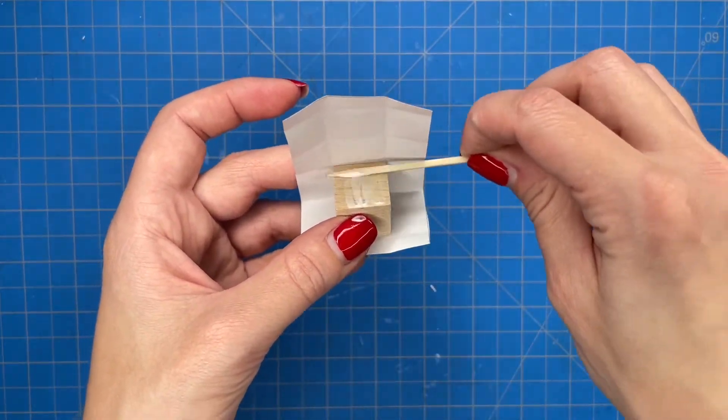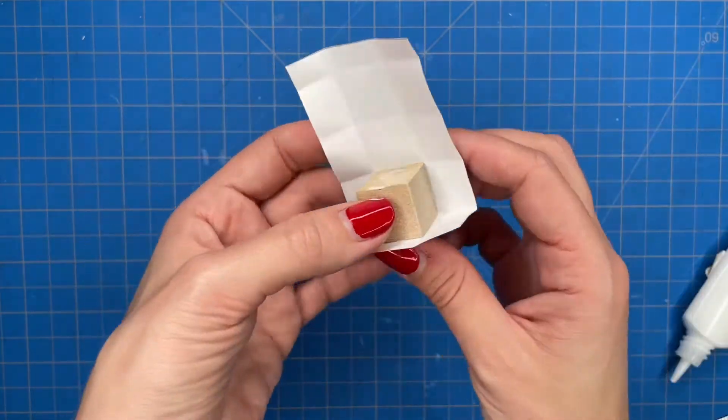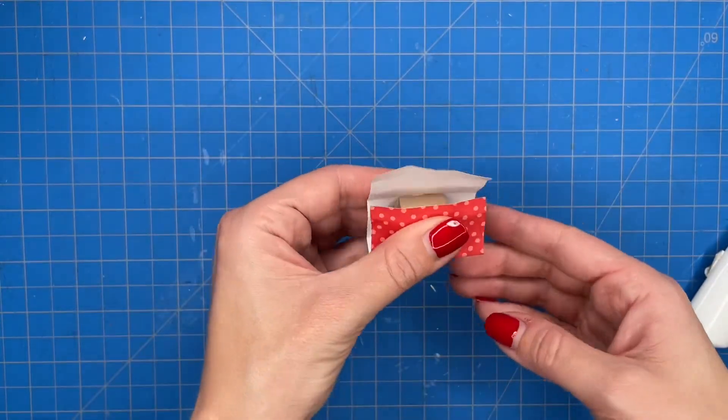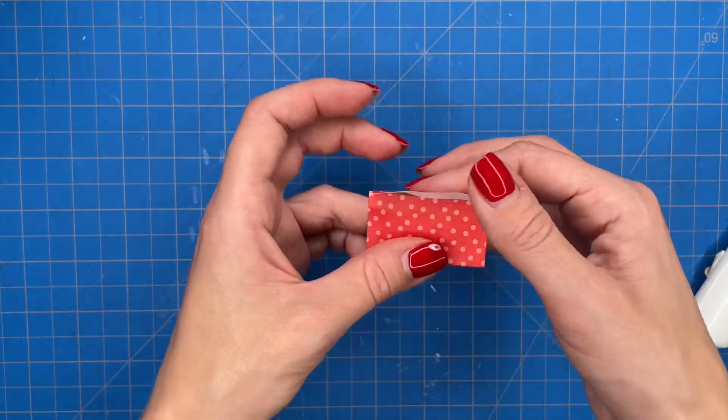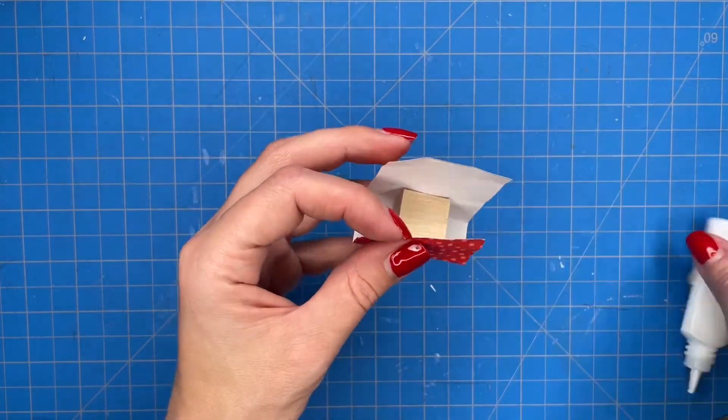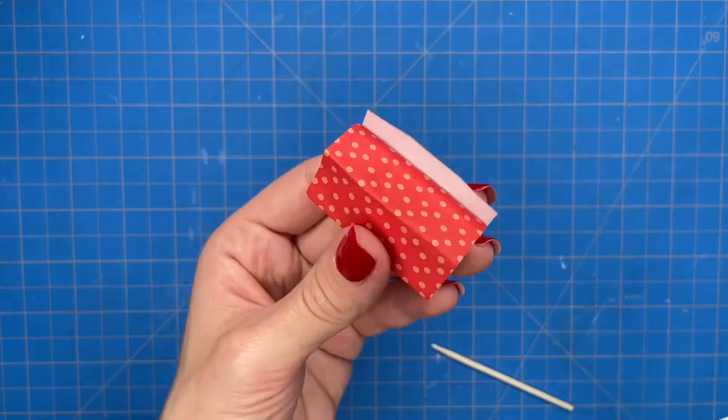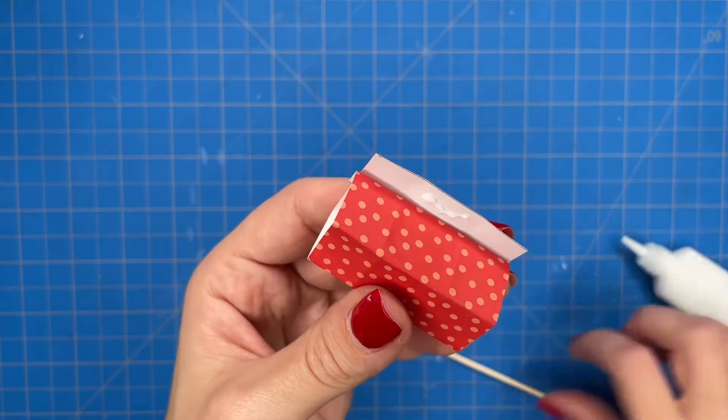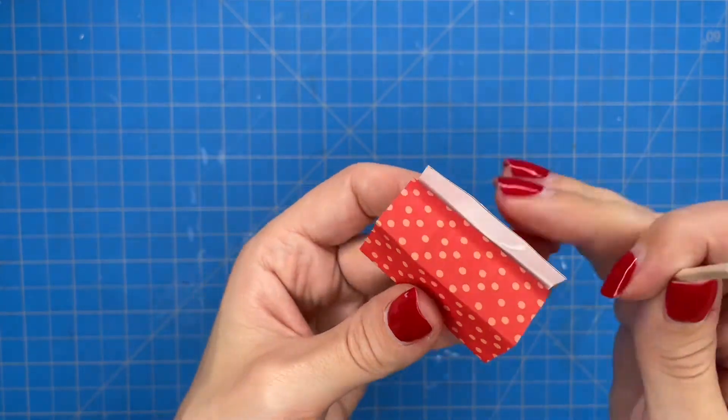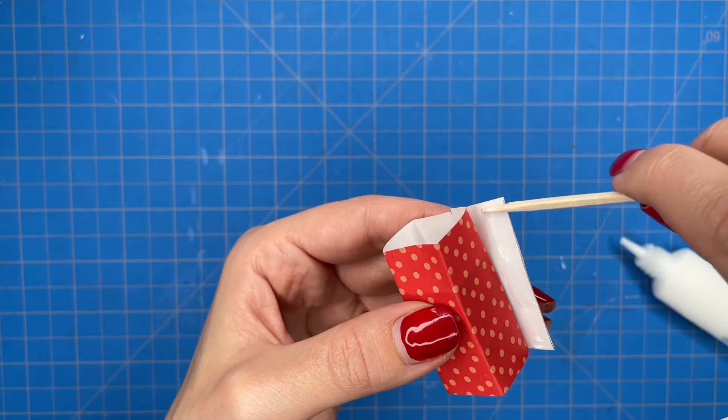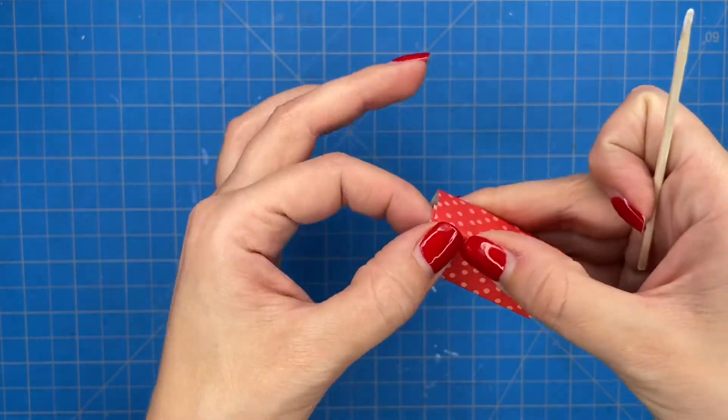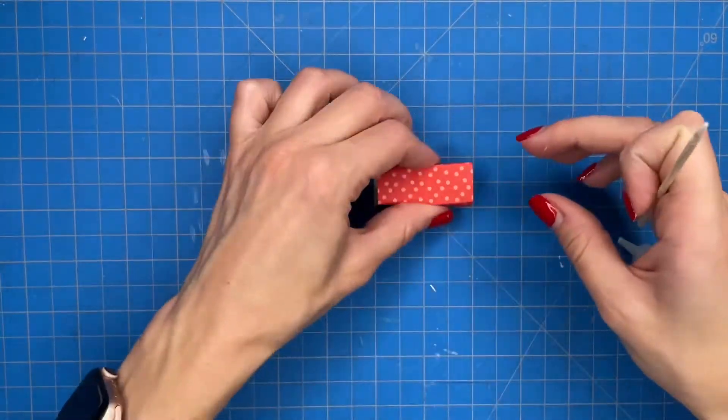And then you're just going to continue doing that until your block is entirely wrapped around and then you're just going to let the glue dry before you move on to the next step.